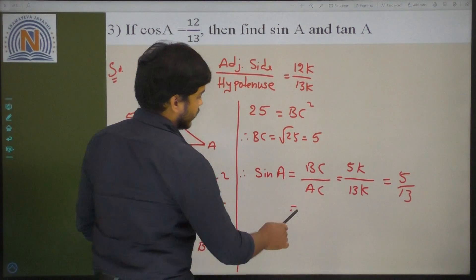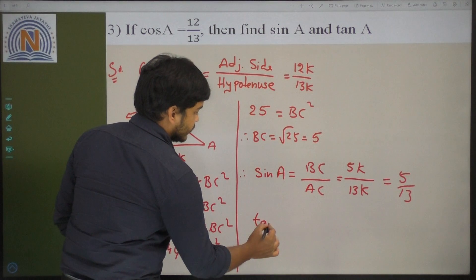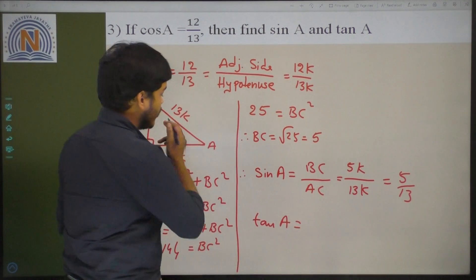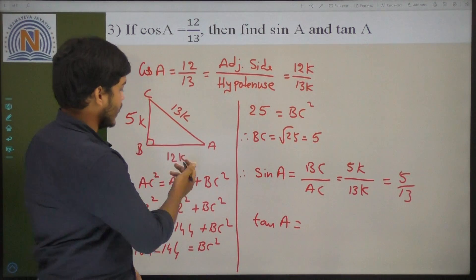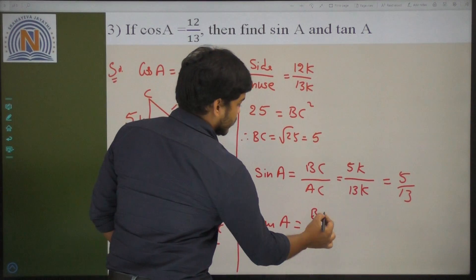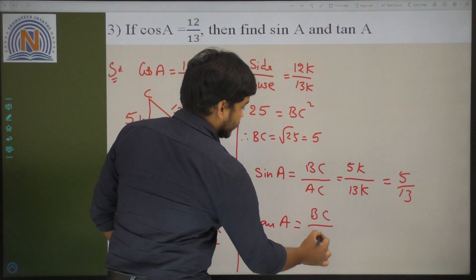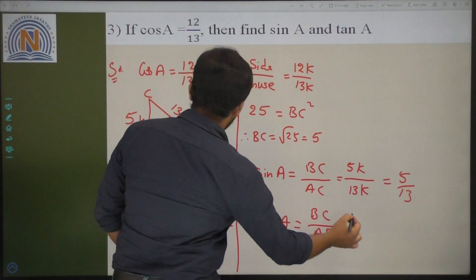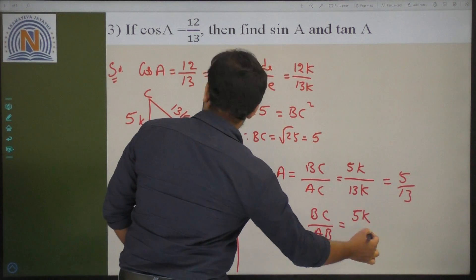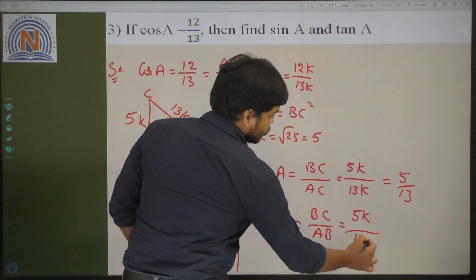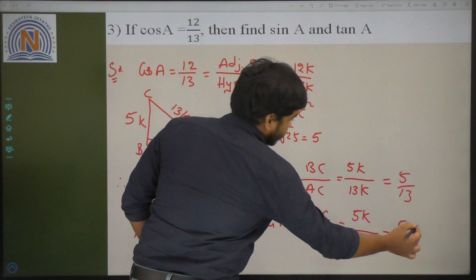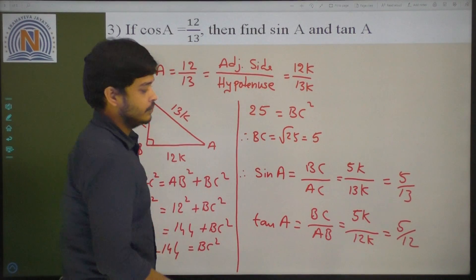Now we need to calculate tan A. Tan A is opposite by adjacent side, that is BC by AB. BC value is 5K by AB value 12K — K and K cancel — then tan A equals 5 by 12.